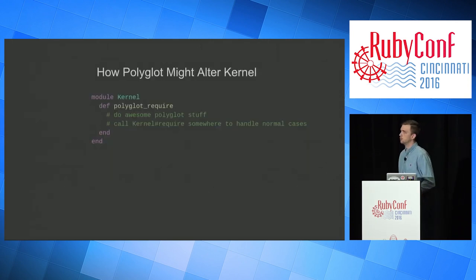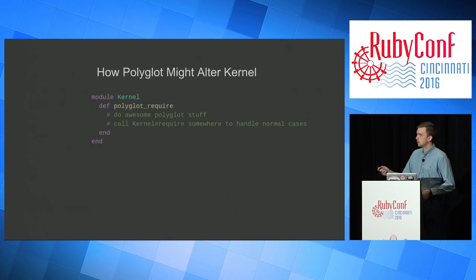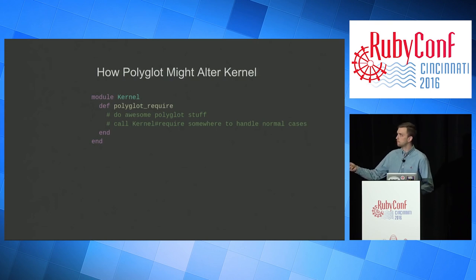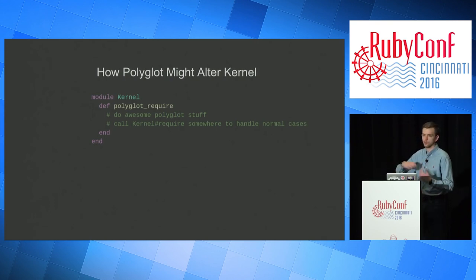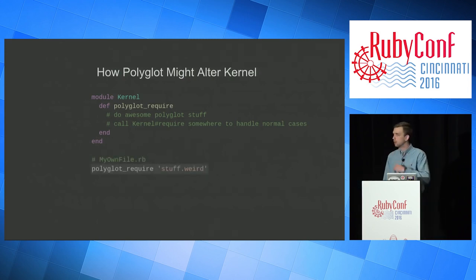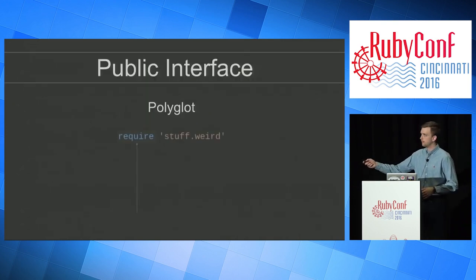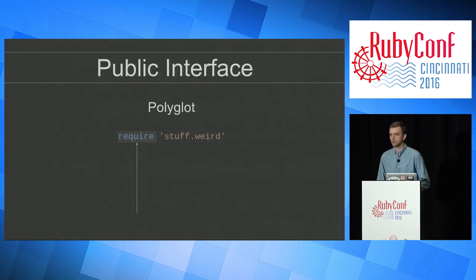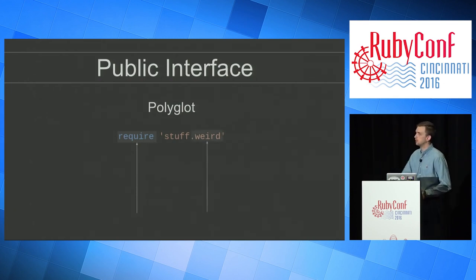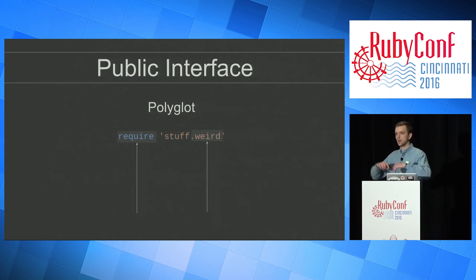Polyglot is a library that allows you to load Ruby files with non-Ruby extensions — it's a custom loader. They open up the kernel module, define a polyglot require method, do some awesome polyglot stuff, then wrap that around the require method to handle normal cases. So in your code it looks like: polyglot require, stuff.weird. They are adding to the existing API — require means something to a developer. It has a generally accepted meaning within the Ruby community, but they've just added to it, wrapped behavior around it. They didn't actually change what it means to require a file.